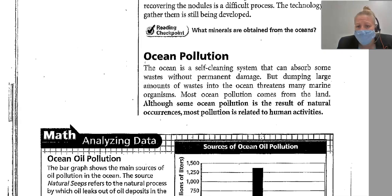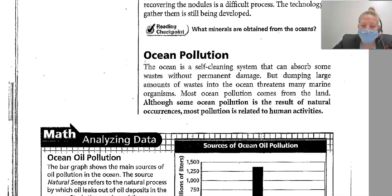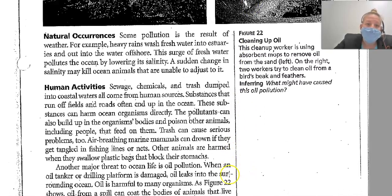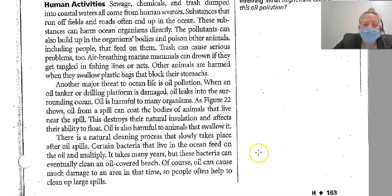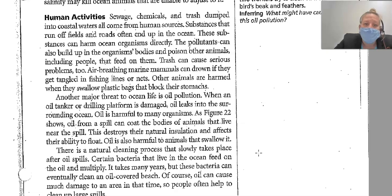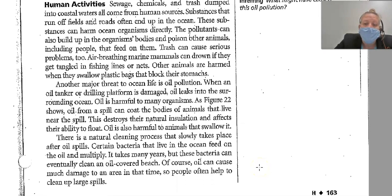The ocean is a self-cleaning system that can absorb some waste without permanent damage, but dumping large amounts of waste threatens many marine organisms. Most ocean pollution comes from land. Although some pollution results from natural occurrences — like heavy rains washing freshwater into estuaries, lowering salinity and harming organisms unable to adjust — most pollution is related to human activities. Sewage, chemicals, and trash dumped into coastal waters all come from human sources. Substances that run off fields and roads end up in the ocean, harming organisms directly or building up in their bodies and poisoning animals, including people, that feed on them.